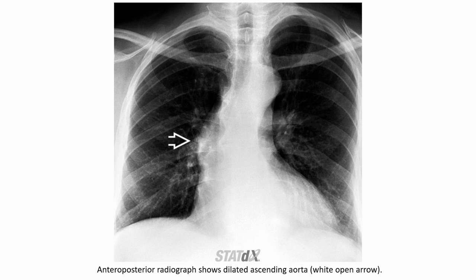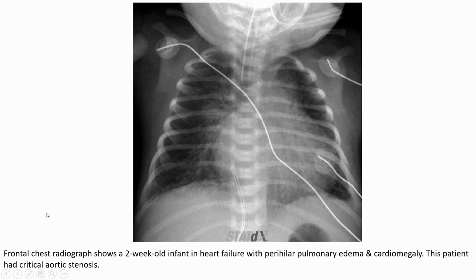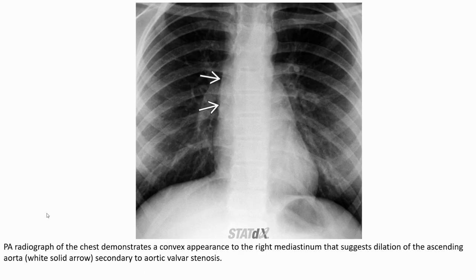The AP radiograph shows a dilated ascending aorta. This is a case of a neonate with heart failure, showing perihilar pulmonary edema and cardiomegaly. This infant had critical aortic stenosis — in this case usually related to a congenital condition. The PA radiograph demonstrates convexity to the right mediastinum, suggesting dilatation of the ascending aorta secondary to aortic valve stenosis.